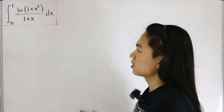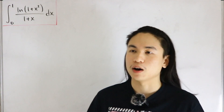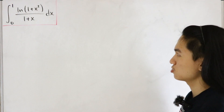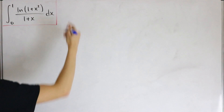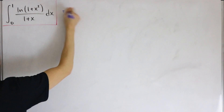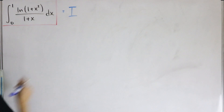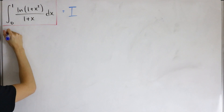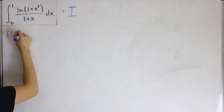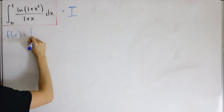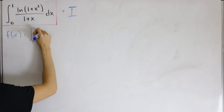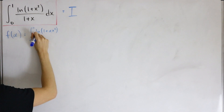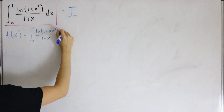So there's a lot going on in today's video. Let's jump right in. We'll call the entire integral capital I, and then we define a function in terms of alpha. So we let f of alpha equal the integral from zero to one of the natural log of one plus alpha times x squared, divided by one plus x, dx.